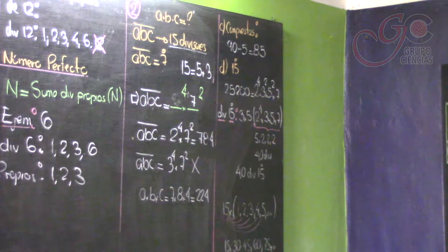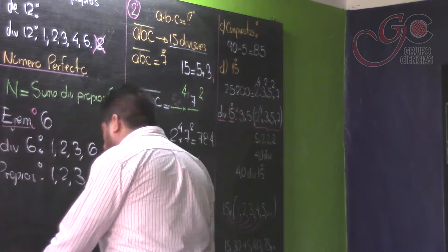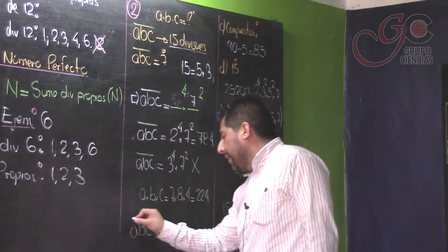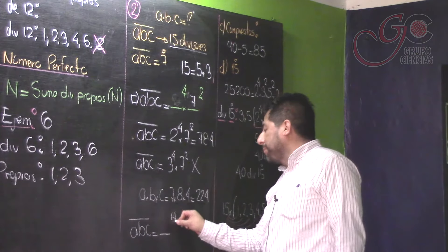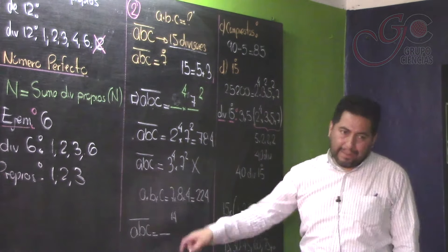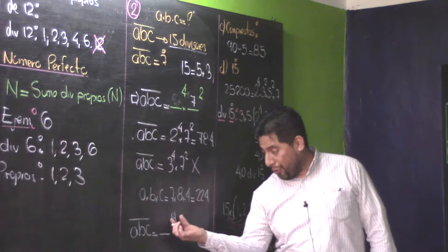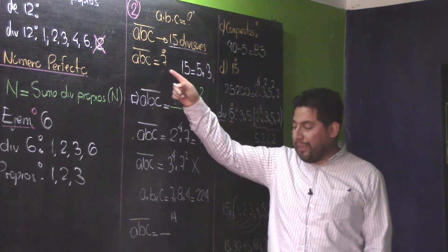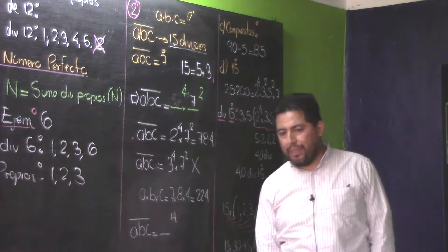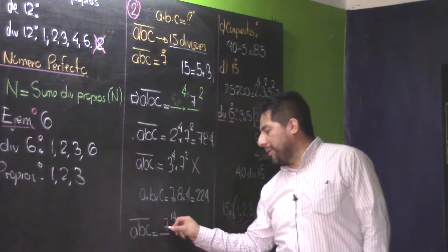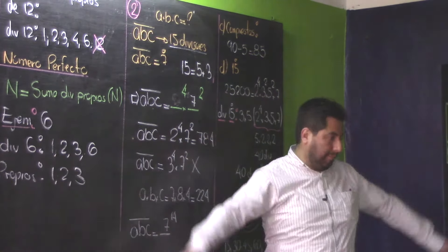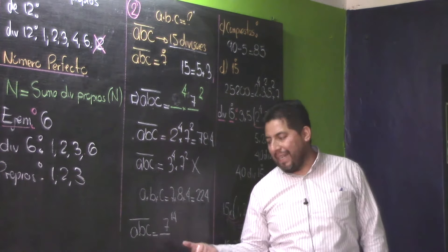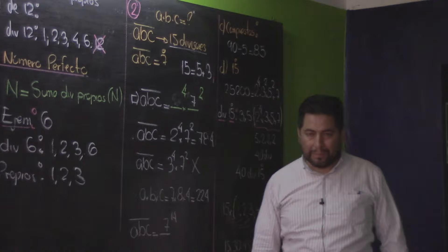Los alumnos preguntan: ¿el 15 puede ser 15 por 1? Claro. Otra posibilidad es que ABC sea algo a la 14, para que tenga 15 divisores (14+1=15). Y el número mínimo que puede ir ahí es el 7, por ser múltiplo de 7. Pero 7 a la 14 es demasiado grande. O sea, esa posibilidad se descarta.